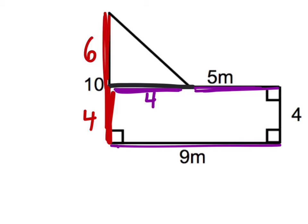So to find the area of the rectangle, this is a 9 by 4 rectangle, and when we find the area of these, we get 36 meters squared.